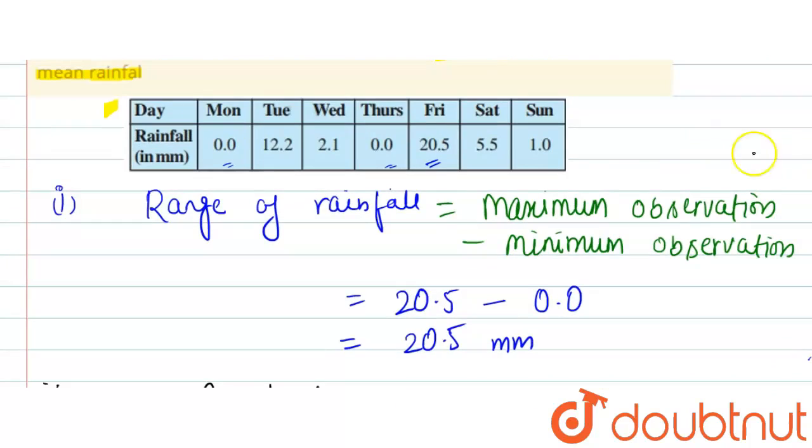Monday, 0.0, that is less than 5.9. Tuesday is 12, that's greater so it will not count. Wednesday, 2.1, that will count. Thursday that will also count. Friday, 20.5, that is greater so it will not count. Saturday, 5.5, that will count since the mean rainfall is 5.9. Sunday is also 1.0, so it will also count. So there are one, two, three, four, five days.